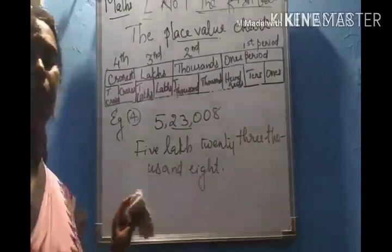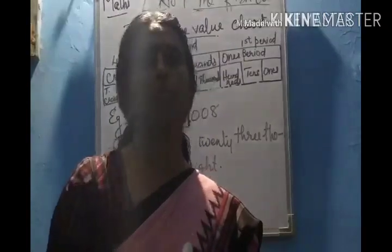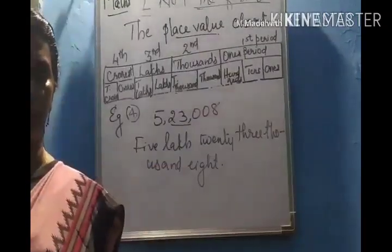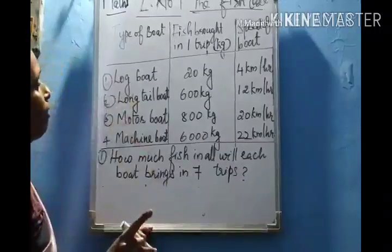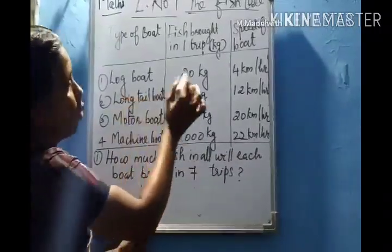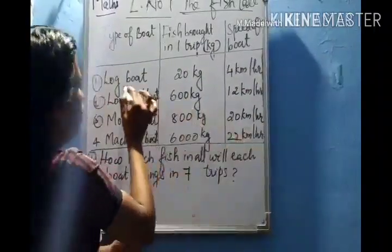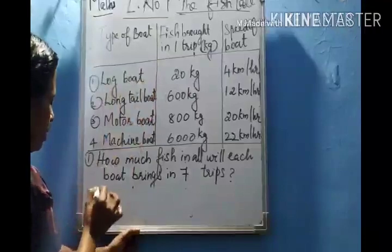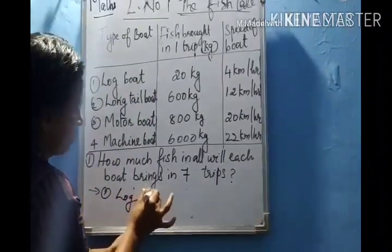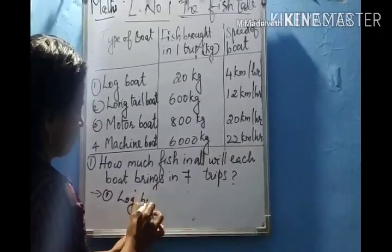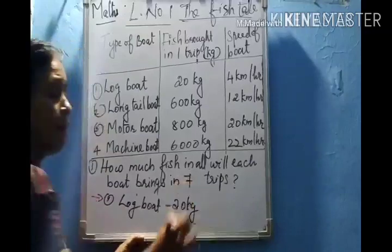Students, I hope you have understood this portion. Now I am going to solve and show some questions from the textbook. The question is about the fish brought in by each type of boat in seven trips. The quantity of fish brought in one trip is given. First, consider the log board — it brings twenty kilograms of fish in one trip.